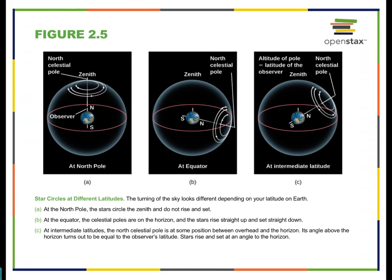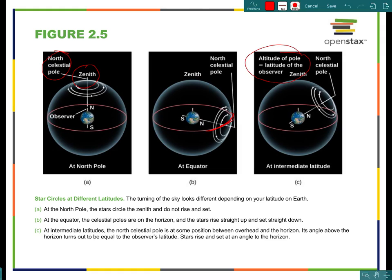If you are an observer at the North Pole, your zenith exactly matches the North Celestial Pole. If you are an observer standing at the equator, the North Celestial Pole is right at your local horizon. At some northern latitude, like in North America, your zenith is neither the North Celestial Pole nor the celestial equator — it's somewhere in between. If you measure the distance between your zenith and the North Celestial Pole, you can determine your latitude.